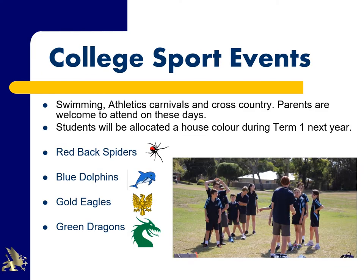College sport events — swimming, athletic carnivals and cross country — are all college events where students from both campuses come together. Parents are welcome to attend on those days. Students will be allocated a house during Term 1: the red Redback Spiders, the blue Blue Dolphins, gold which are the Eagles, and green which are the Green Dragons.